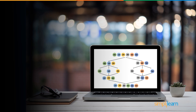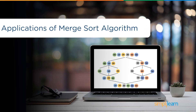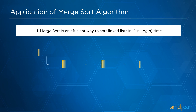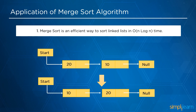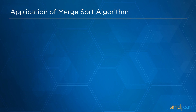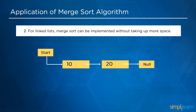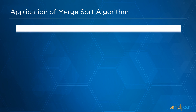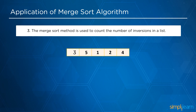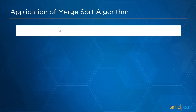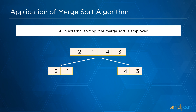We will now look at several applications of the merge sort algorithm. First, merge sort is an efficient way to sort linked lists in O(n log n) time. Merge sort can be implemented for linked lists without taking up more space. The merge sort method is also used to count the number of inversions in a list, and it is employed in internal sorting.